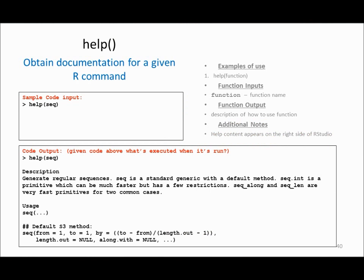A very important function in R is called help. Whenever you are using any function or any package, you can just type help and the function name and it will display all the description of that function, how to use it, and what is the output of that function. So in that case I am trying to see the help of a function called seq. This is a very useful function whenever you are trying to use a new function.